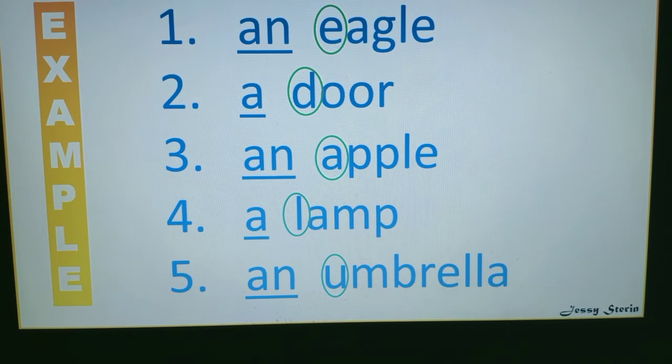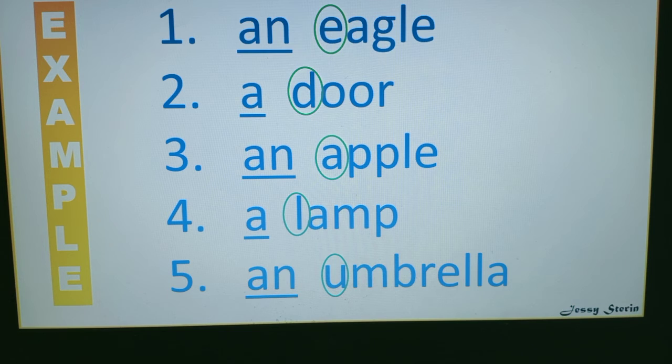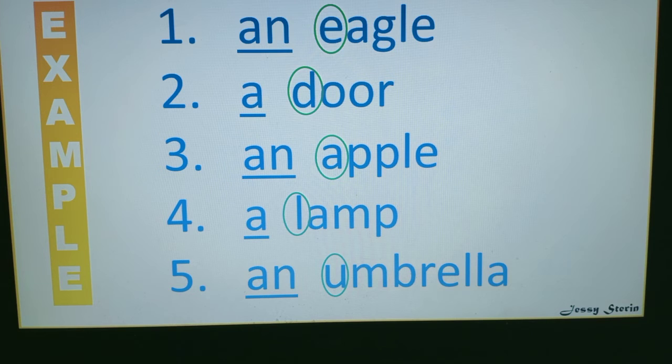Now try number two. Number two says: __ door. Which letter is in the circle? 'D', because that is the first letter after the dash. 'D' is a consonant, so we will write 'a' in front of that and it will become 'a door'.